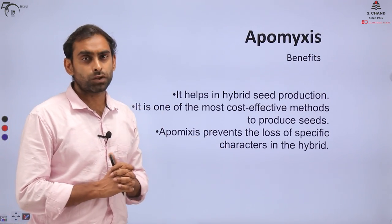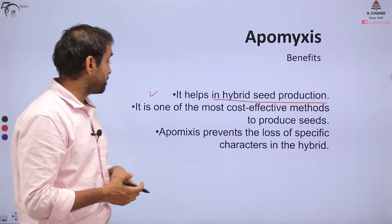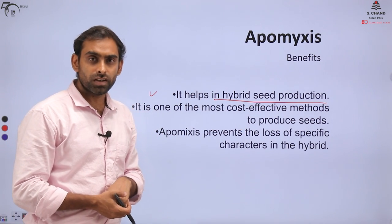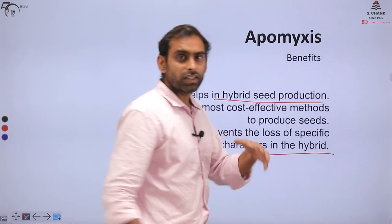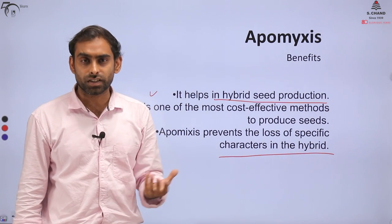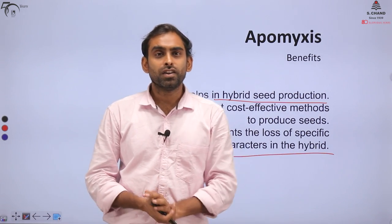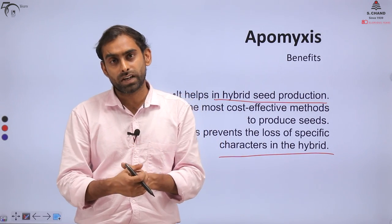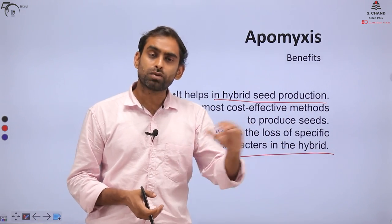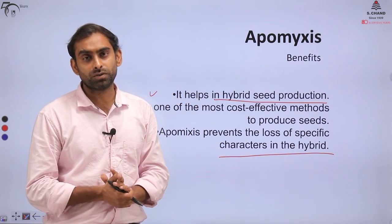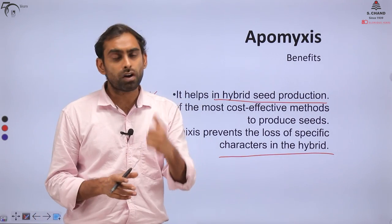What is the benefit of Apomyxis to plants and humans? It helps in hybrid seed production and is one of the most cost-effective methods to produce seed. Apomyxis also prevents the loss of specific characters because you are essentially creating clones — genetic information is completely conserved. Since only one parent is involved, there is no chance of mixing of traits, making it ideal for breeding pure lines and preserving germplasm.